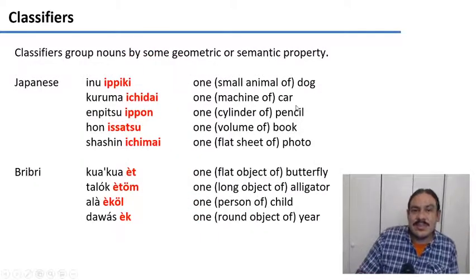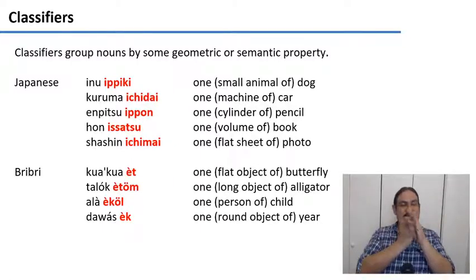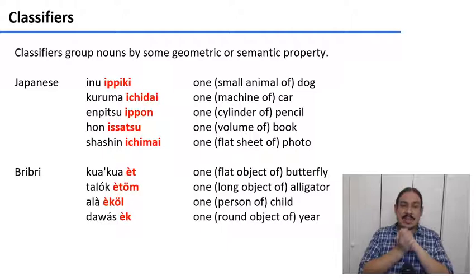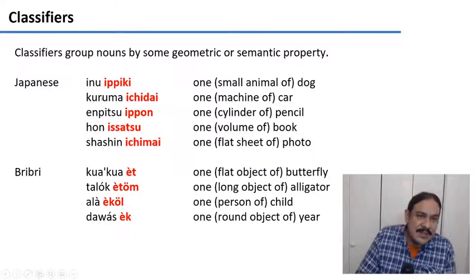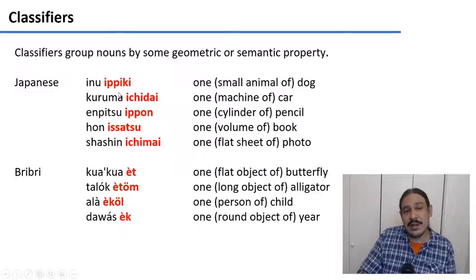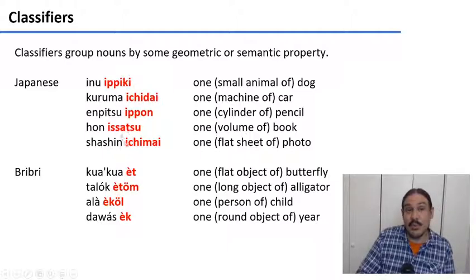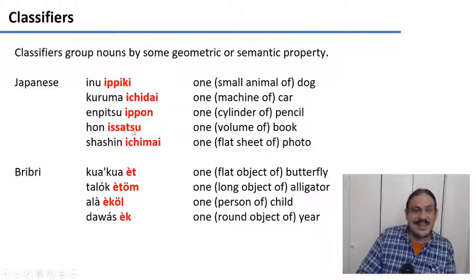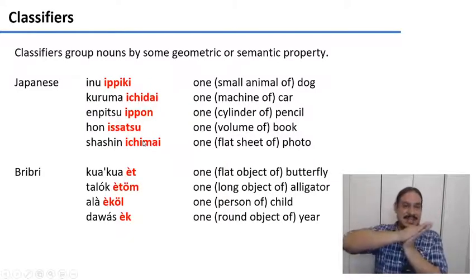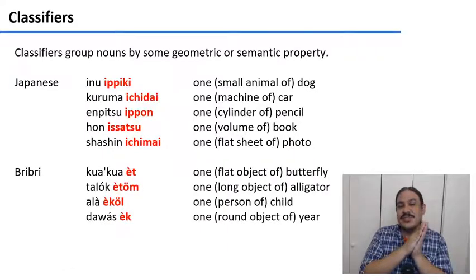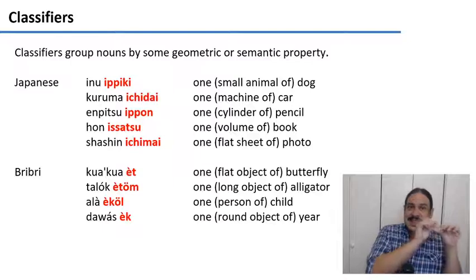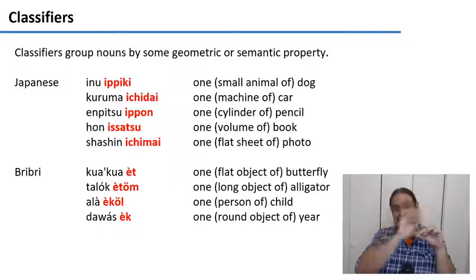There are also languages that use words to describe the shape of objects — classifiers. In Japanese, the noun itself doesn't have a classification morpheme, but if you want to count the noun — one dog, one car, one pencil — you need to say a specific form of the word one. For example, 'inu ippiki' is one small animal of dog, 'kuruma ichidai' is one machine of car, and 'shashin ichimai' is one flat sheet of photo. Each noun has its assigned classifier, and you need to memorize these as you're learning the language.